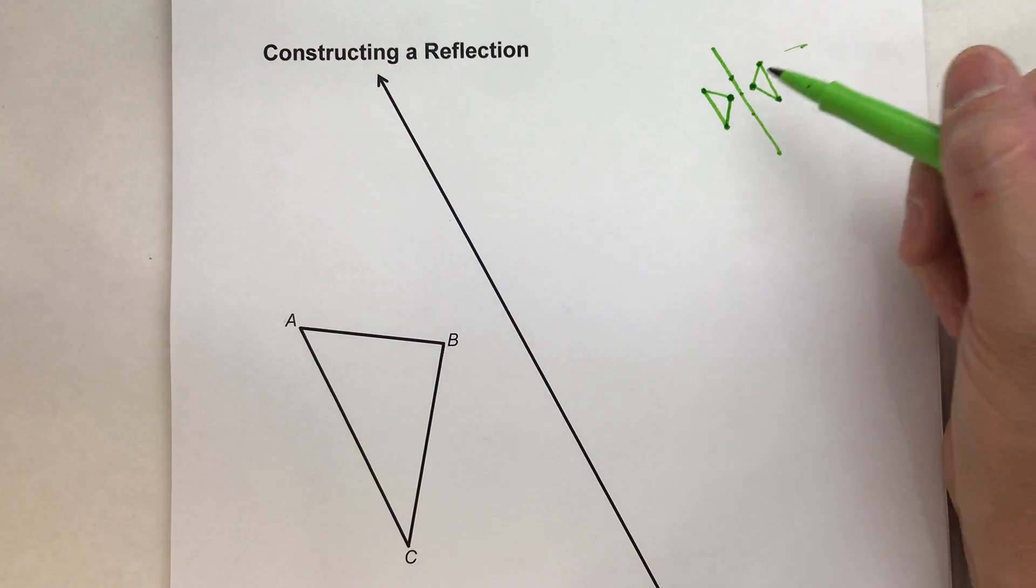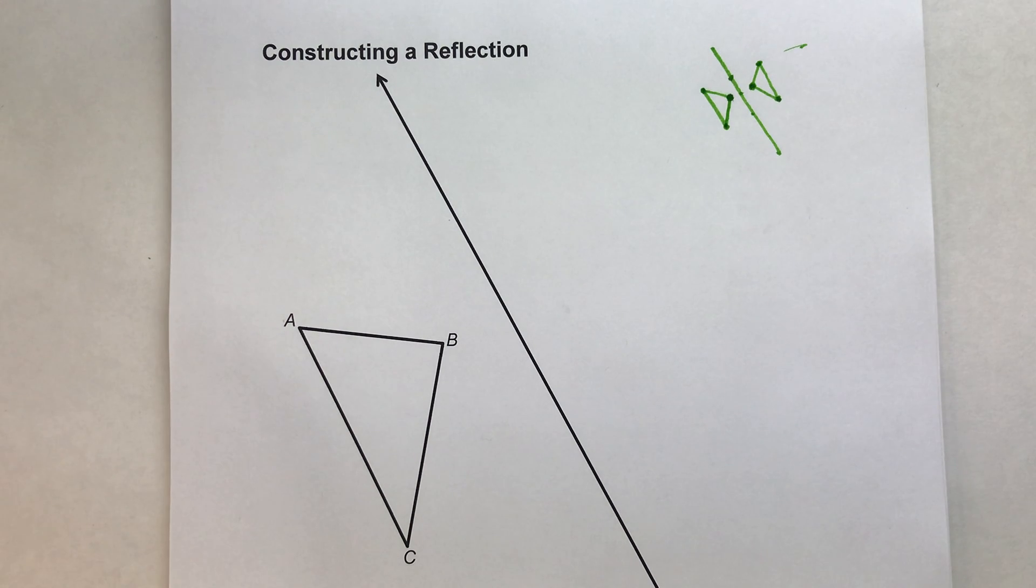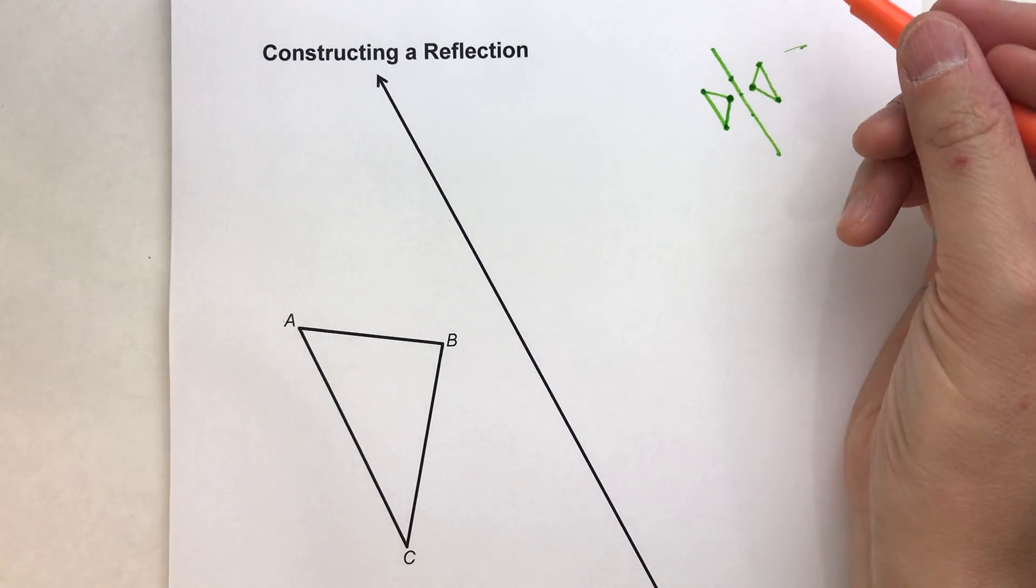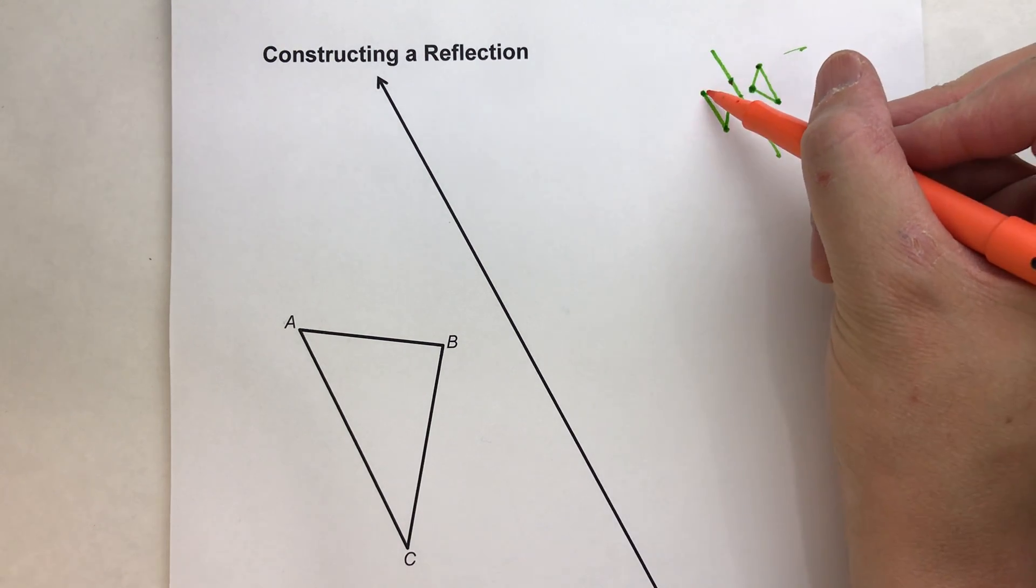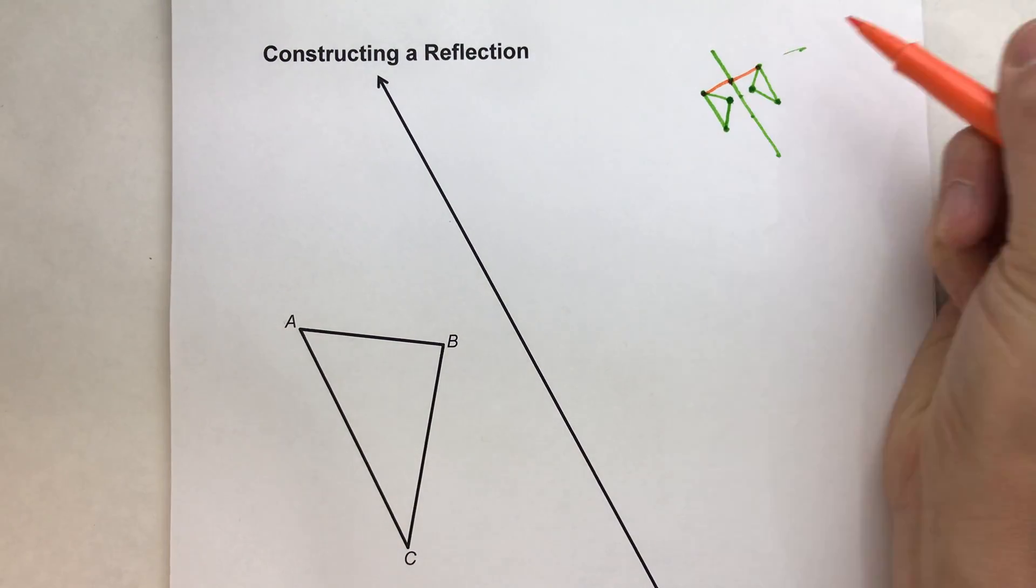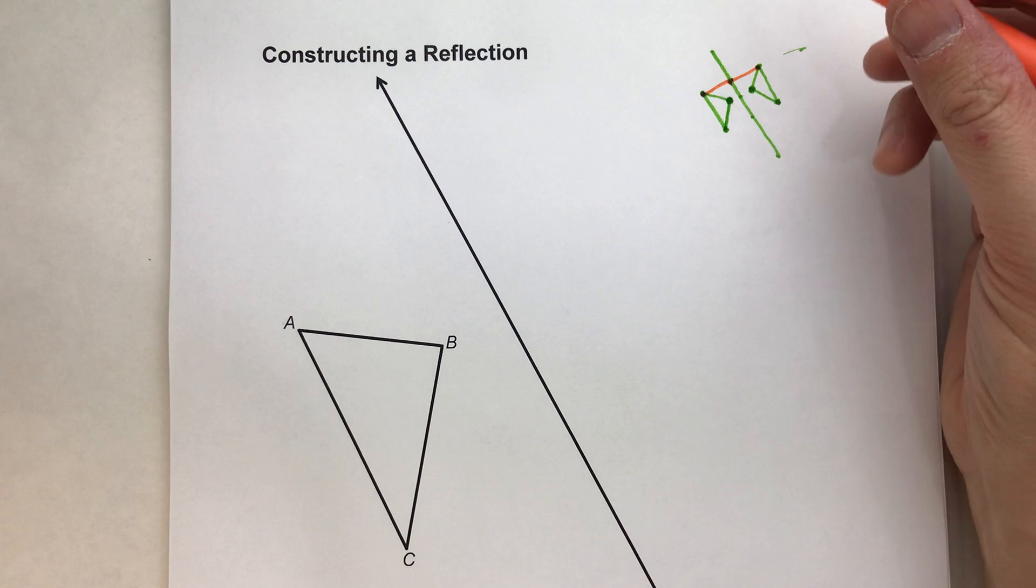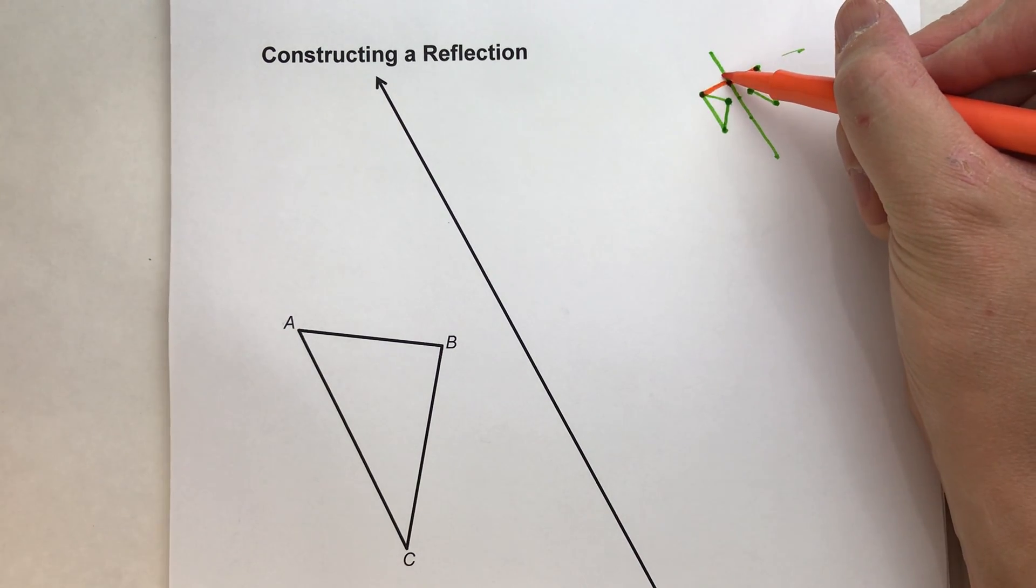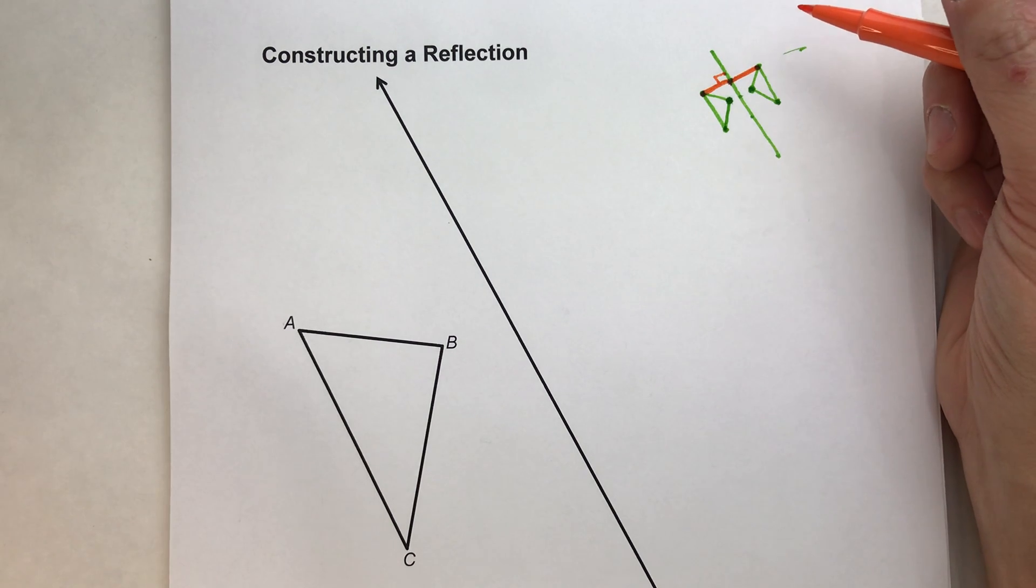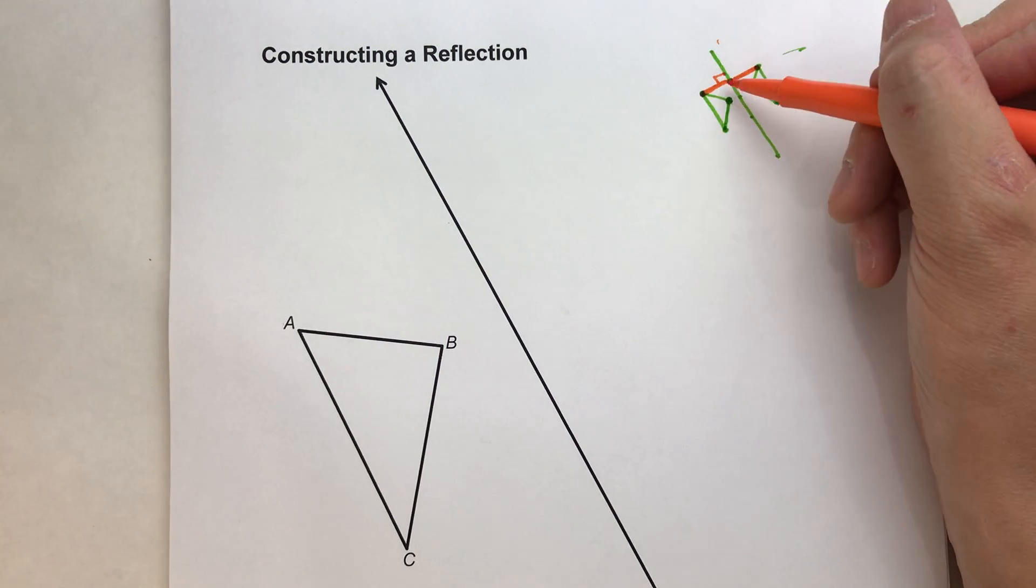And notice, it's the mirror image of the original shape. Now, the key to this is when I say it's the same distance on the other side, for example from here to here, when I say it's the same distance, I'm saying that this distance here is the same as this distance here, but that distance is measured perpendicularly to the line of reflection.